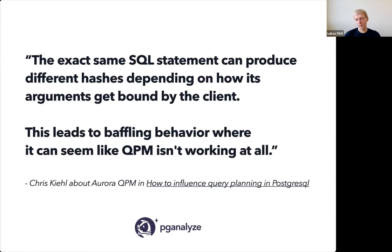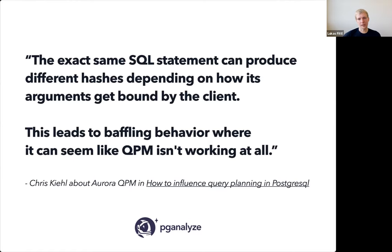There was a great post by Chris Keel describing the motivations for using Aurora QPM in production — to get specific plans used consistently. But one of the key challenges he saw was that the exact same statement can produce different hashes depending on client arguments, which made it often not work in their particular example.